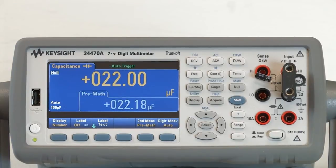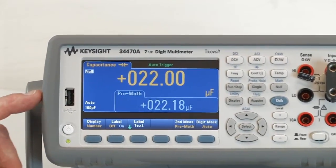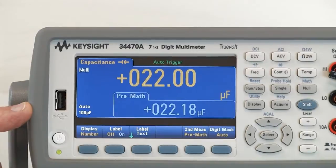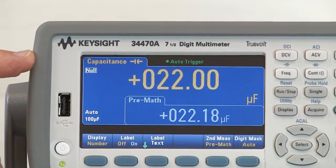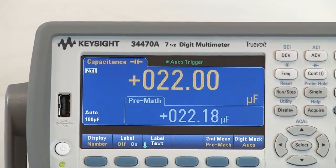So here we are seeing displayed at the same time the true or the original reading without the offset, with on top showing the null or the corrected value of the display.